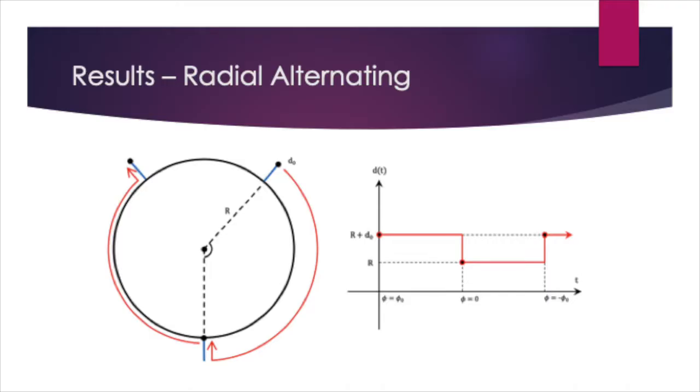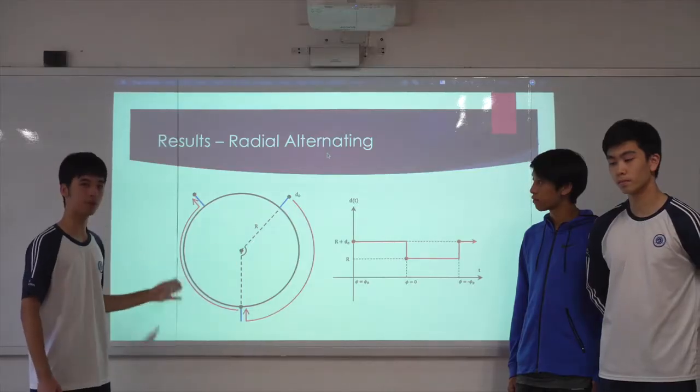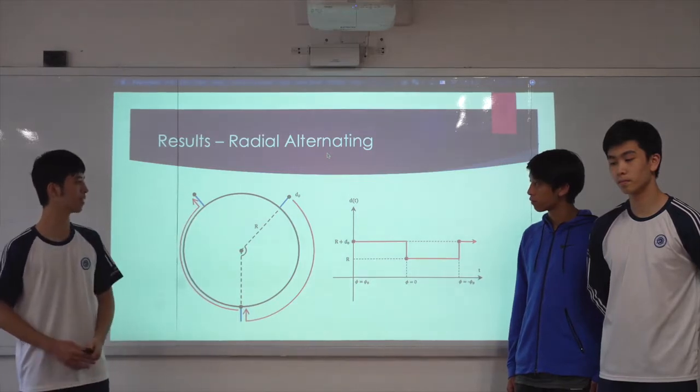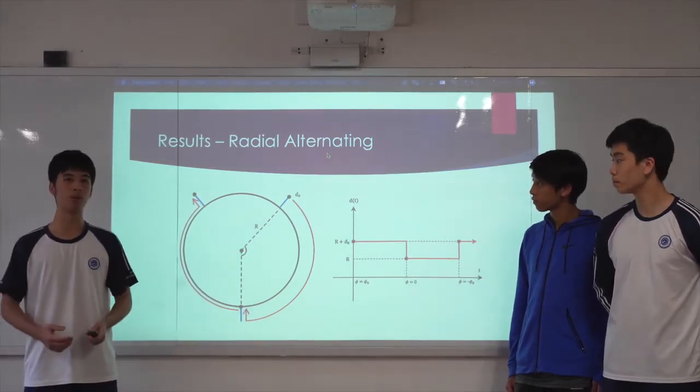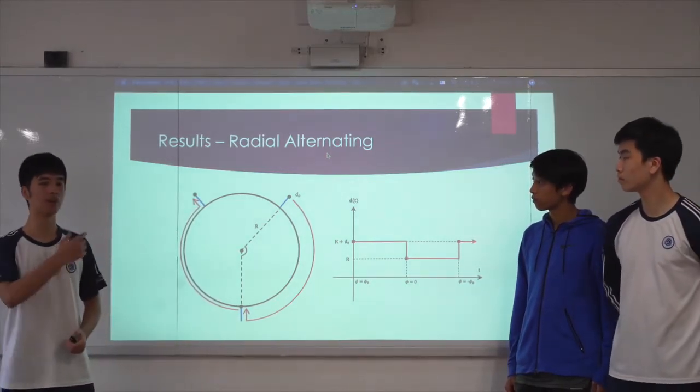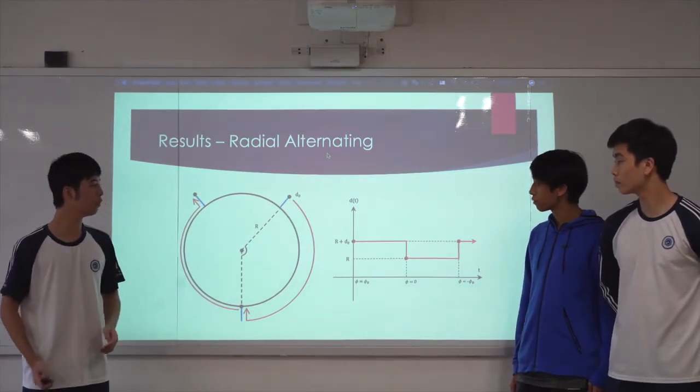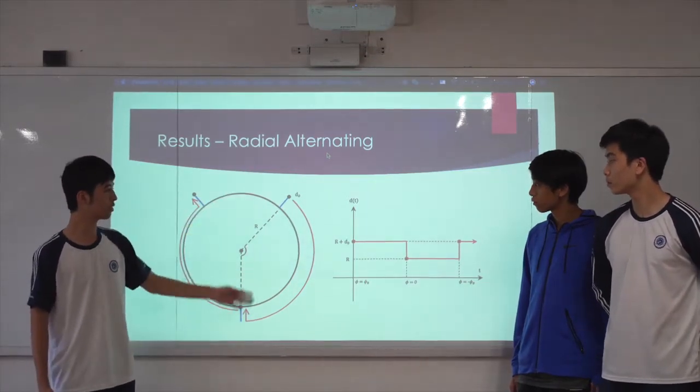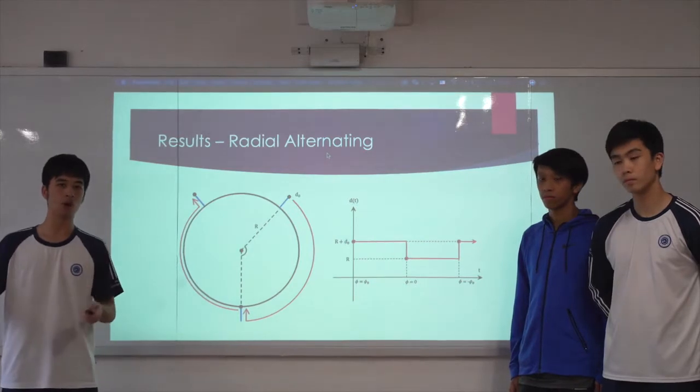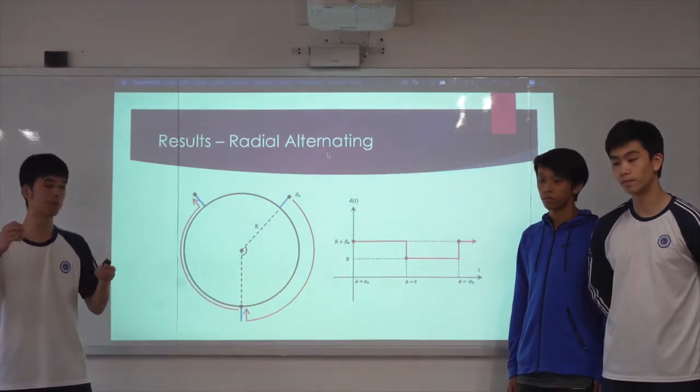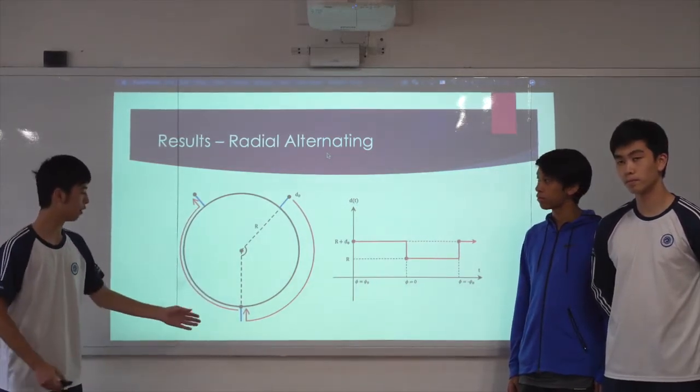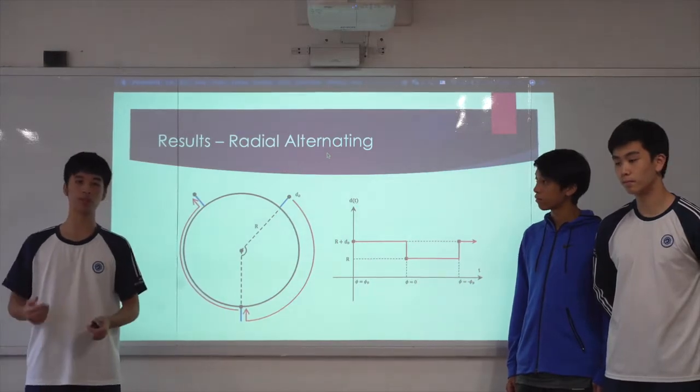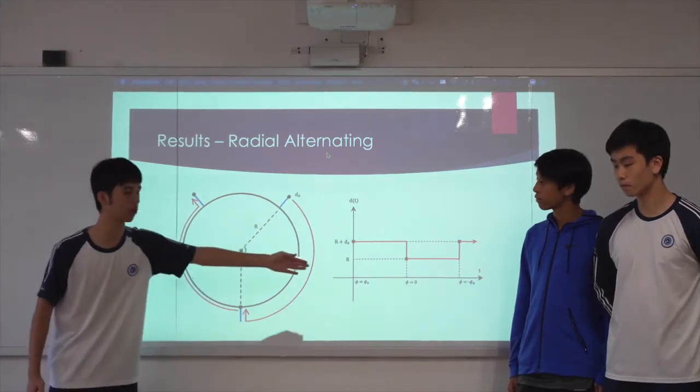First, we can observe the effects of radial movement for alternating rotating wheels. Through a mathematical proof based on the equation of motion, we can prove that for falling intervals, the mass will always be as far from the center of the wheel as possible. On rising intervals, it will be as close as possible, and this is represented by the graph on the right.